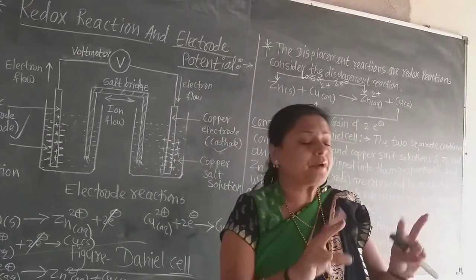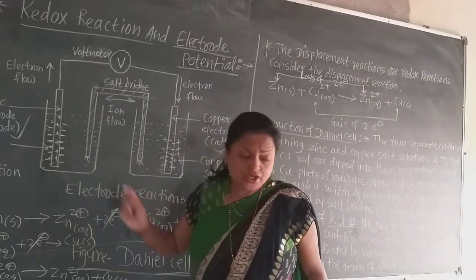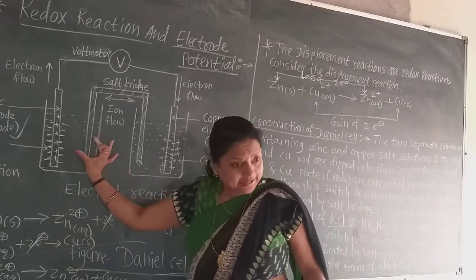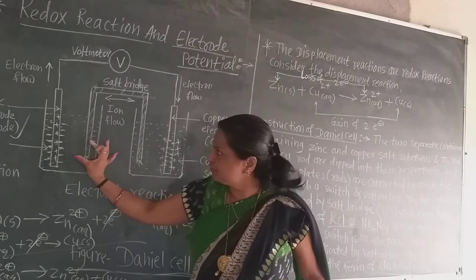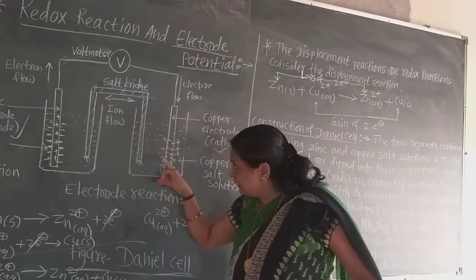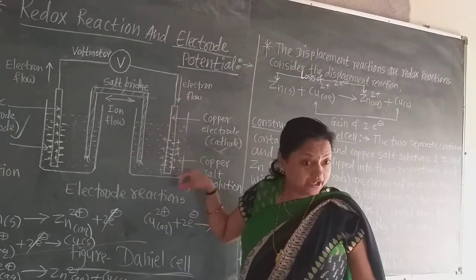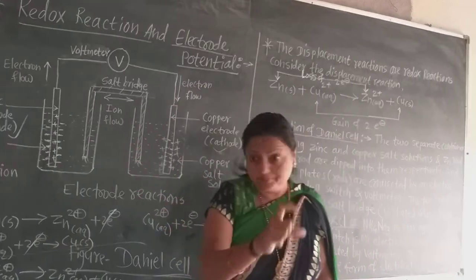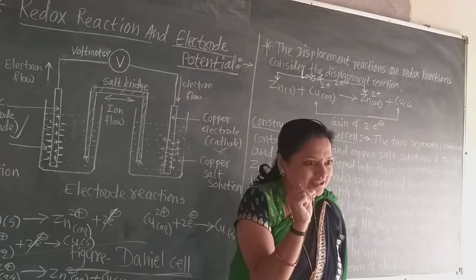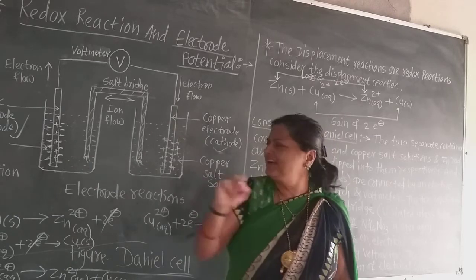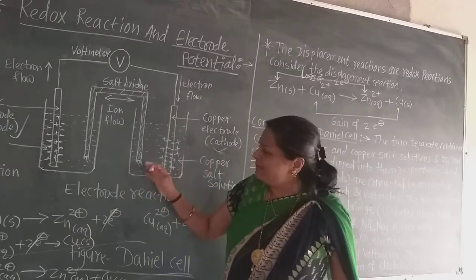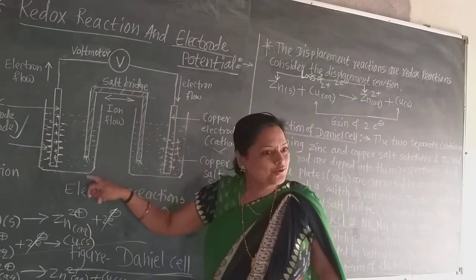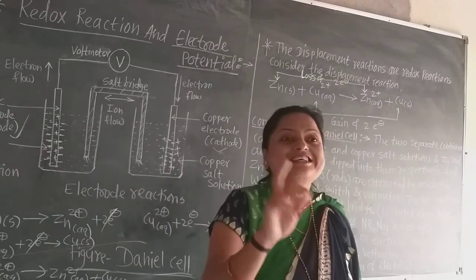The salt bridge only connects the two solutions. There are two priorities — if we do not use a salt bridge, we could take a small container of zinc sulphate solution with the zinc rod dipped in it and place it into the large container of copper sulphate solution, but the small container must have pores. Due to that the solutions may somewhat mix, and therefore the best way is to connect the solutions by the salt bridge.